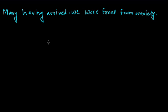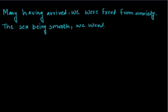One more sentence: 'the sea being smooth, we went for a sail' — 'being' is the present participle used absolutely. In each of these sentences, the participle with the noun or pronoun going before it forms a phrase independent of the rest of the sentence. Such a phrase is called an absolute phrase, and the noun or pronoun so used with the participle is called a nominative absolute.